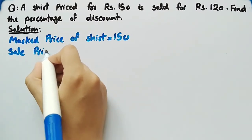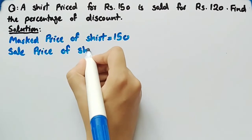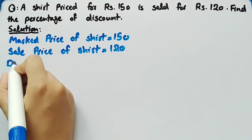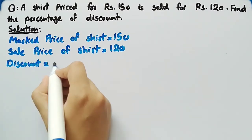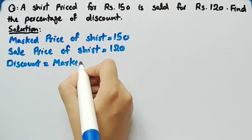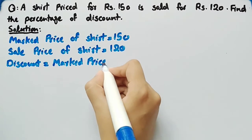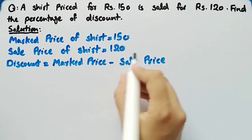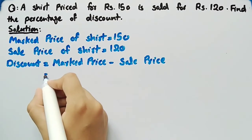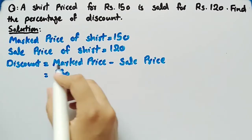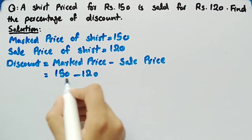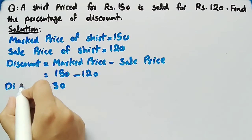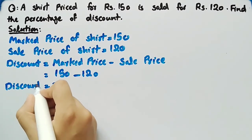We know that discount is equal to marked price minus sale price. By substituting the values, discount equals marked price 150 minus sale price 120. 150 minus 120 is 30, so the discount is 30 rupees.